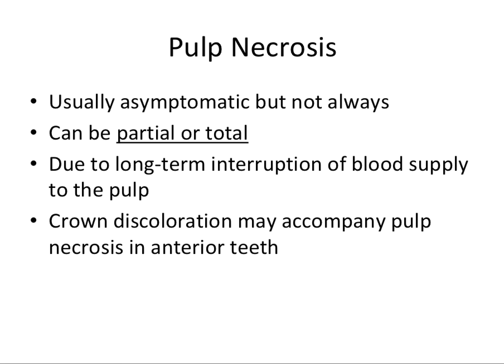Last among pulpal diagnoses, we have pulp necrosis, which is usually asymptomatic but not always. Pulp necrosis is basically death of the pulp tissue, and it may occur quickly or require years. This process may be painful, but more frequently it is asymptomatic. It can be partial or total necrosis and is often due to long-term interruption of blood supply. Crown discoloration may accompany pulp necrosis, particularly in anterior teeth, and can be treated with root canal therapy and internal bleaching.